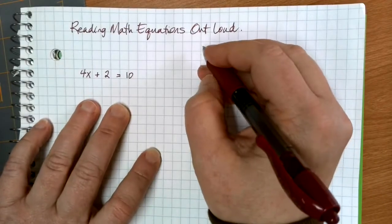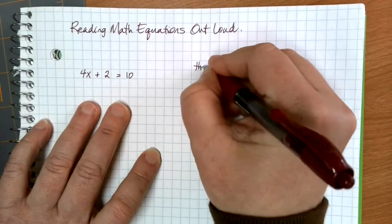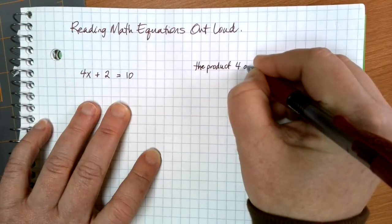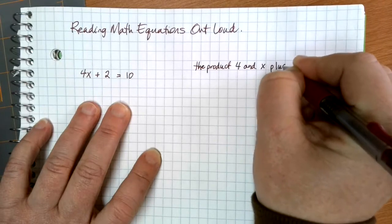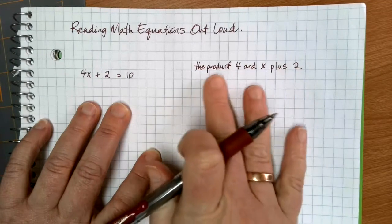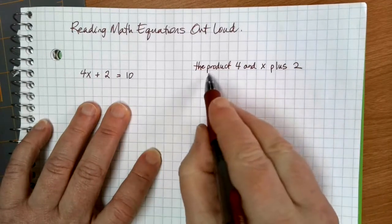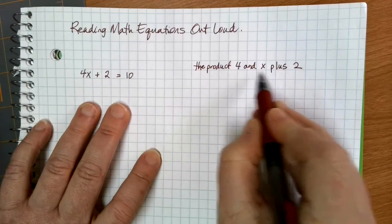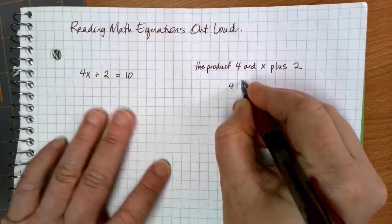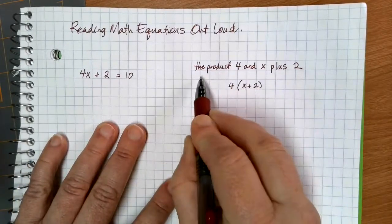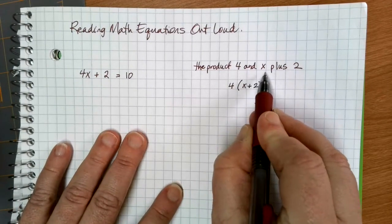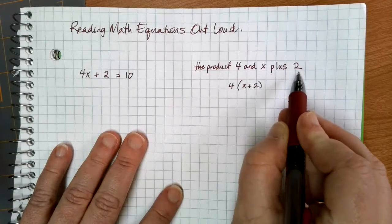If I write, for example, the product of 4 and x plus 2, it's not 100% clear what's going on here. Am I multiplying the product, am I multiplying 4 and x plus 2, or am I multiplying 4 and x and then plusing 2?